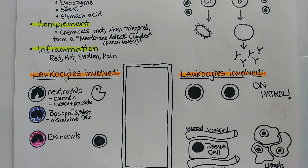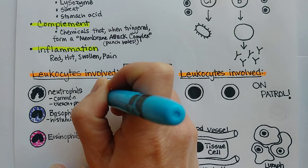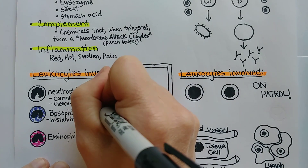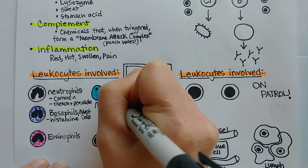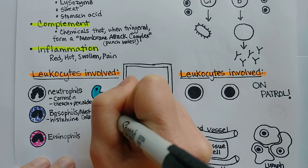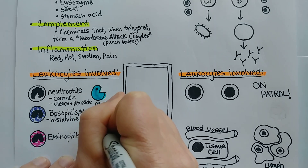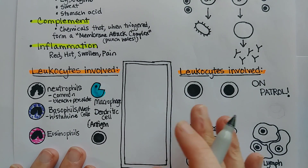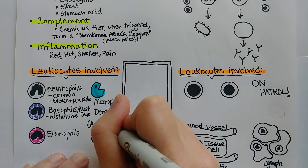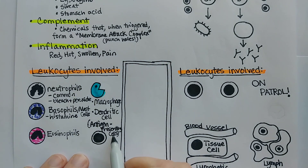Eosinophils seem to be very important in fighting parasitic worm infections and are also elevated in allergies. Another leukocyte involved in the innate immune response is the macrophage — macrophages are big eaters and very good at phagocytosis. There's also a similar cell called a dendritic cell. Together, macrophages and dendritic cells are called antigen presenting cells, and they present antigens to other white blood cells to start off the adaptive immune response.